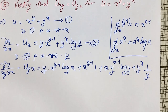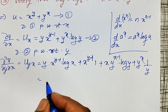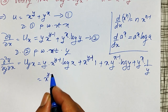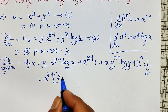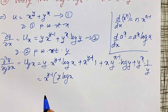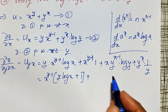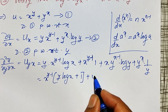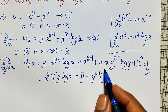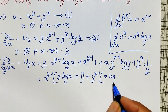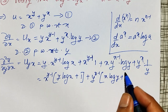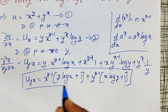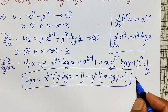Simplifying: taking x raised to y minus 1 common from the first two terms leaves y log x plus 1. Taking y raised to x minus 1 common from the next two terms leaves x log y plus 1. This is my u_yx. Call this equation number 3.